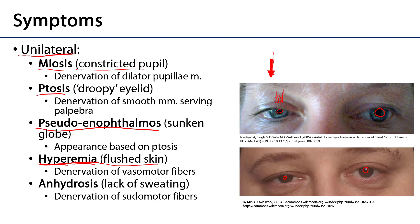The next symptom is anhydrosis — an absence of sweating. Sweat glands are exclusively supplied by the sympathetic division of the autonomic nervous system. When the sudomotor fibers that serve them are denervated, they cease to excrete, and as a consequence there is unilateral anhydrosis.